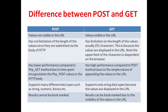The differences between POST and GET methods are: In the POST method, values are not visible in the URL. POST method has no limitation on the length of the values since they are submitted via the body of HTTP. GET method has a limitation on the length of the values, usually 255 characters, because the values are displayed in the URL — note that the upper limit of characters depends on the browser. POST method has lower performance compared to GET method due to time spent encapsulating the PHP POST values in the HTTP body. GET method has higher performance compared to POST method due to the simple nature of appending values in the URL.